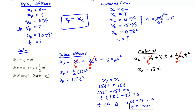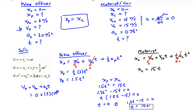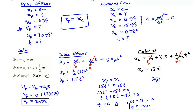We're also asked to find the velocity of the police officer at catch-up. Using v final equals v initial plus acceleration times time: zero plus three times ten gives a final speed of 30 meters per second. For the position where the police officer catches up with the motorist, we can use either equation — both give the same result. The car's position is 15 times T, so 15 times 10 equals 150 meters.